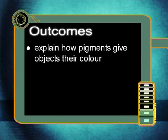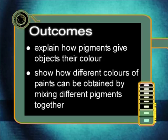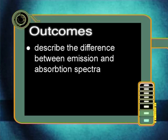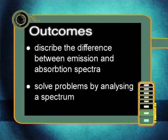By the end of this lesson, you should be able to explain how pigments give objects their color, show how different colors of paints can be obtained by mixing different pigments together, describe the difference between emission and absorption spectra, and solve problems by analyzing a spectrum.